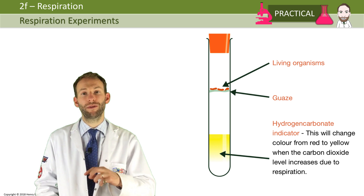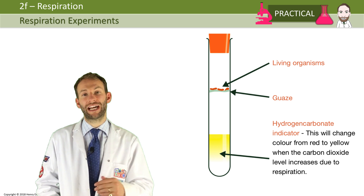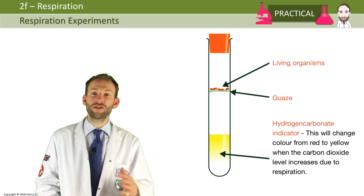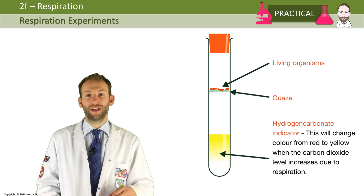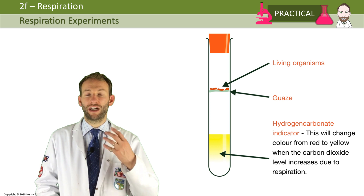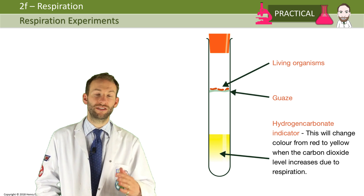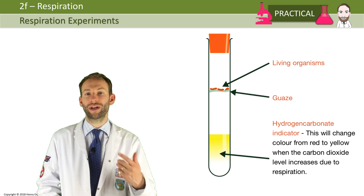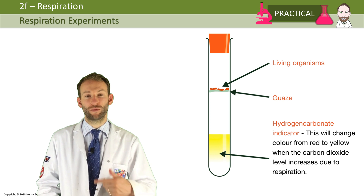We use an indicator that comes up a couple of times in the IGCSE course called Hydrogen Carbonate Indicator. This indicator changes colour depending on how much carbon dioxide dissolves into it. If there's a lot, it goes very yellow, and if there's not very much, it goes orangey-red, and if there's none at all, it will go more towards purple. Here we've got some living organisms — you could use germinated seeds or boiled seeds as a control. You could put some little woodlice in there, and then you can see over time how quickly it takes for the Hydrogen Carbonate Indicator to go from red to yellow as more and more CO2 is produced as a waste product of respiration.